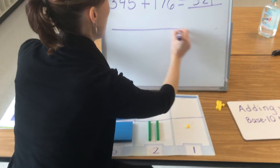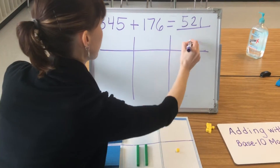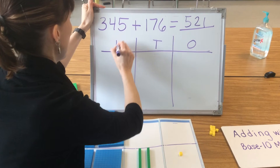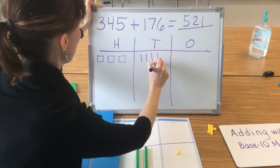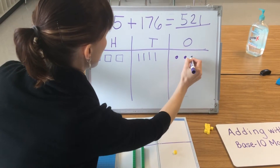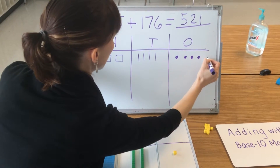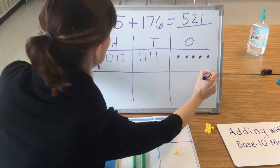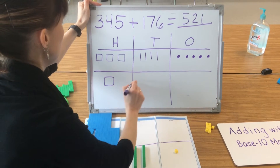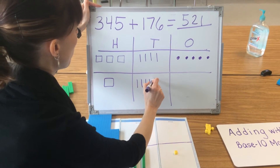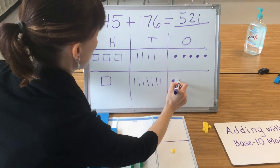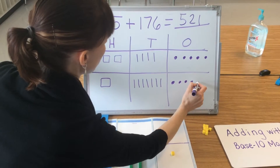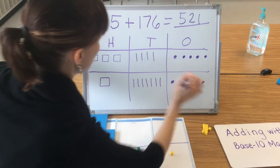Let's check that with a pictorial model. Ones, tens, hundreds. I model 345 with 3 hundreds: 310, 320, 330, 340, 341, 342, 343, 344, 345. Separate my quantities. Then model 176: 100, 110, 120, 130, 140, 150, 160, 170, 171, 172, 173, 174, 175, 176.